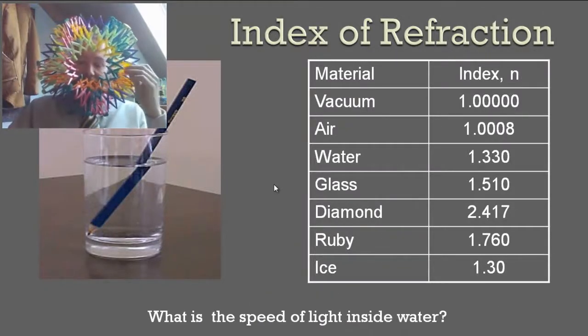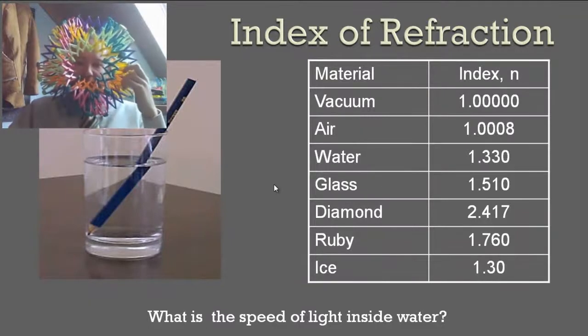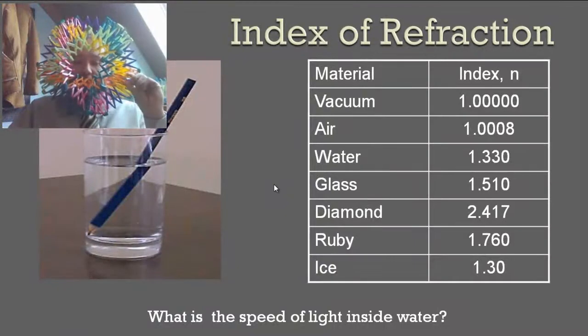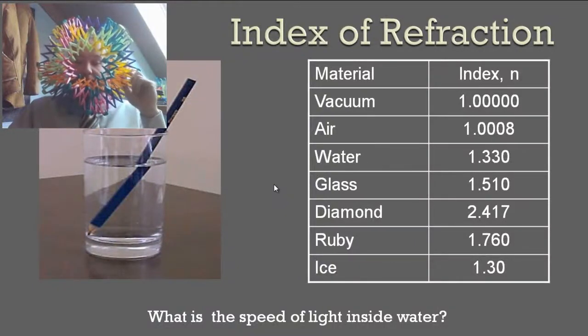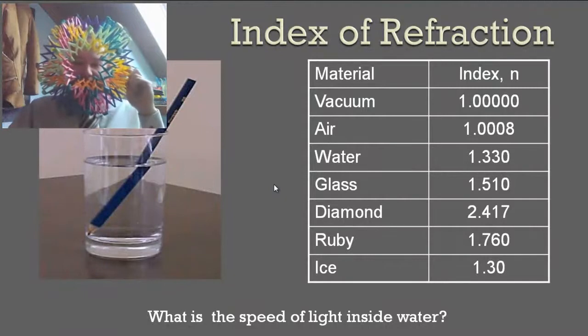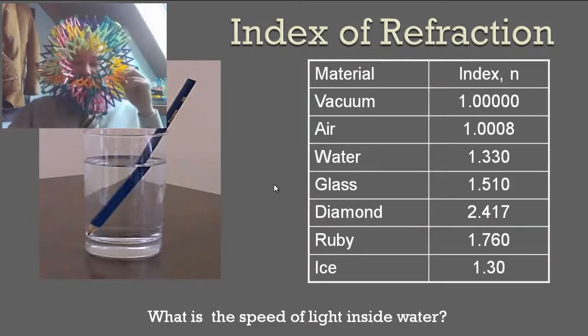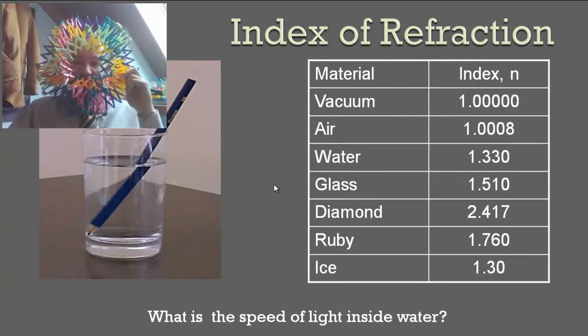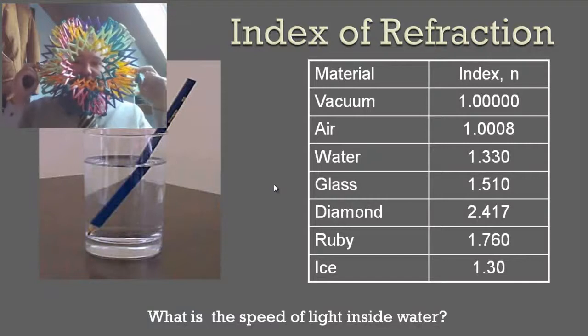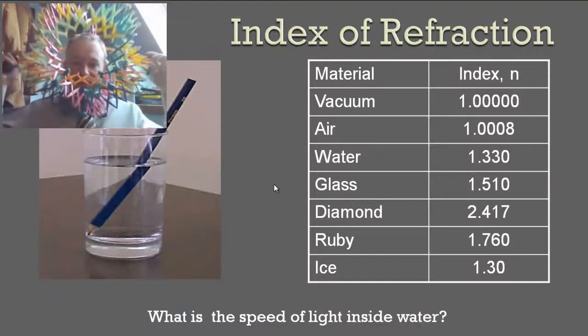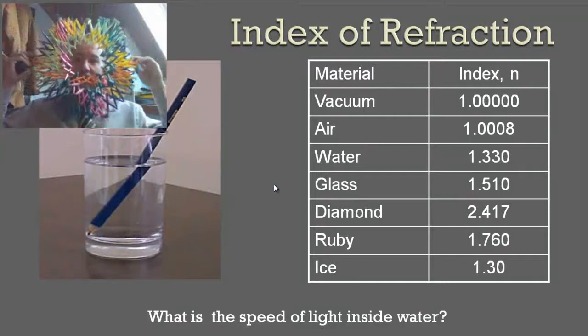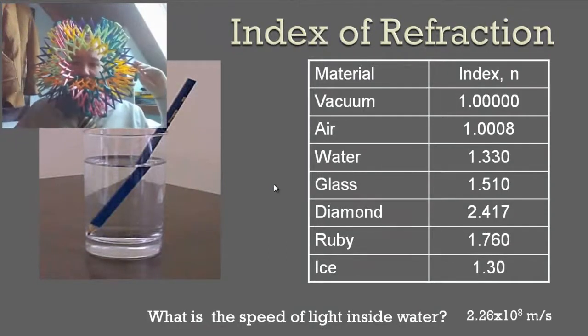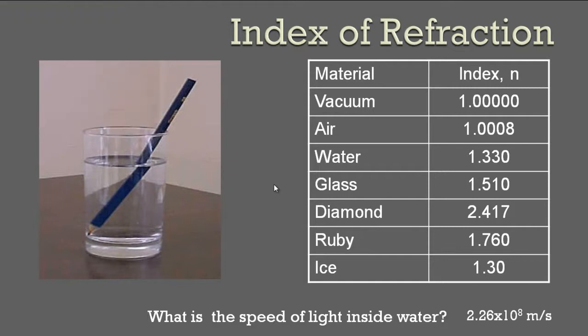What is the speed of light inside of water? Pause now and figure this out on your own. I'll wait for you to pause. And now I'll continue because I know all of you were diligent and paused and figured this out on your own. So you do the same thing: v equals c over n, speed of light 3 times 10 to the 8 meters per second, divided by the index of refraction of water. So 3 times 10 to the 8 divided by 1.33, and you get 2.26 times 10 to the 8 meters per second.